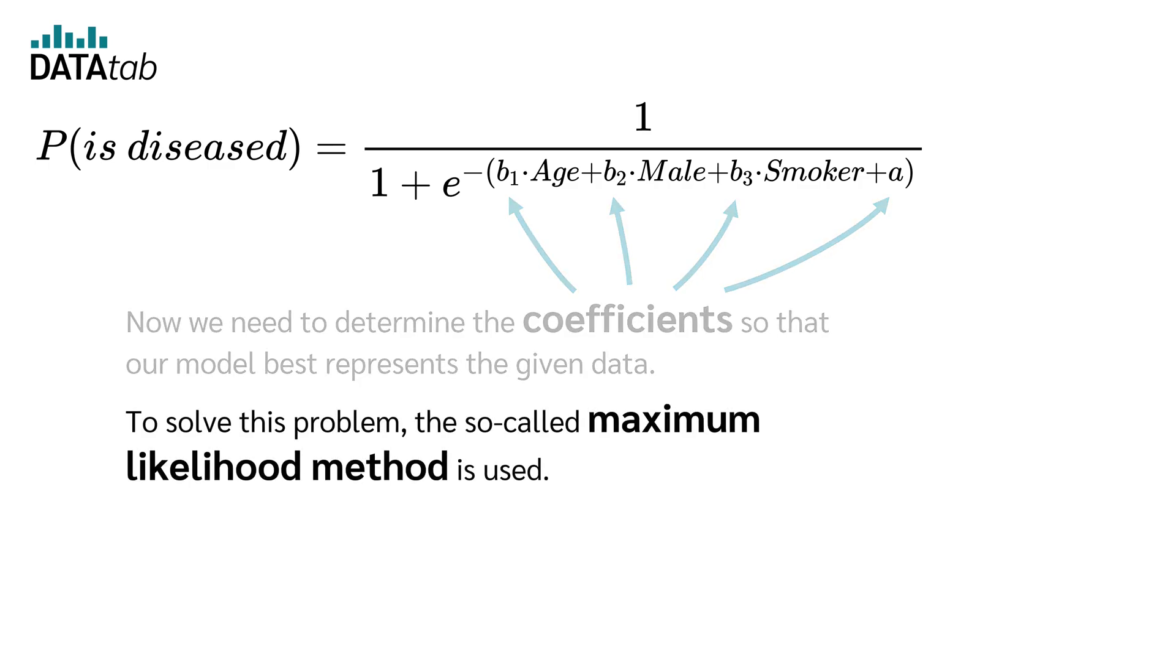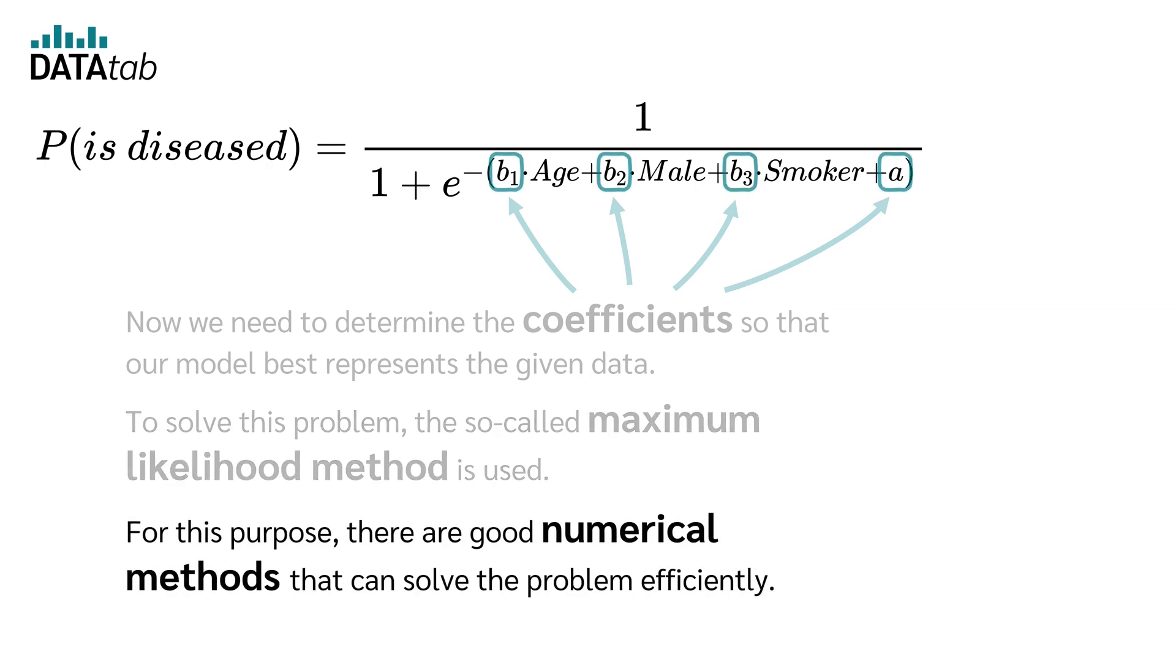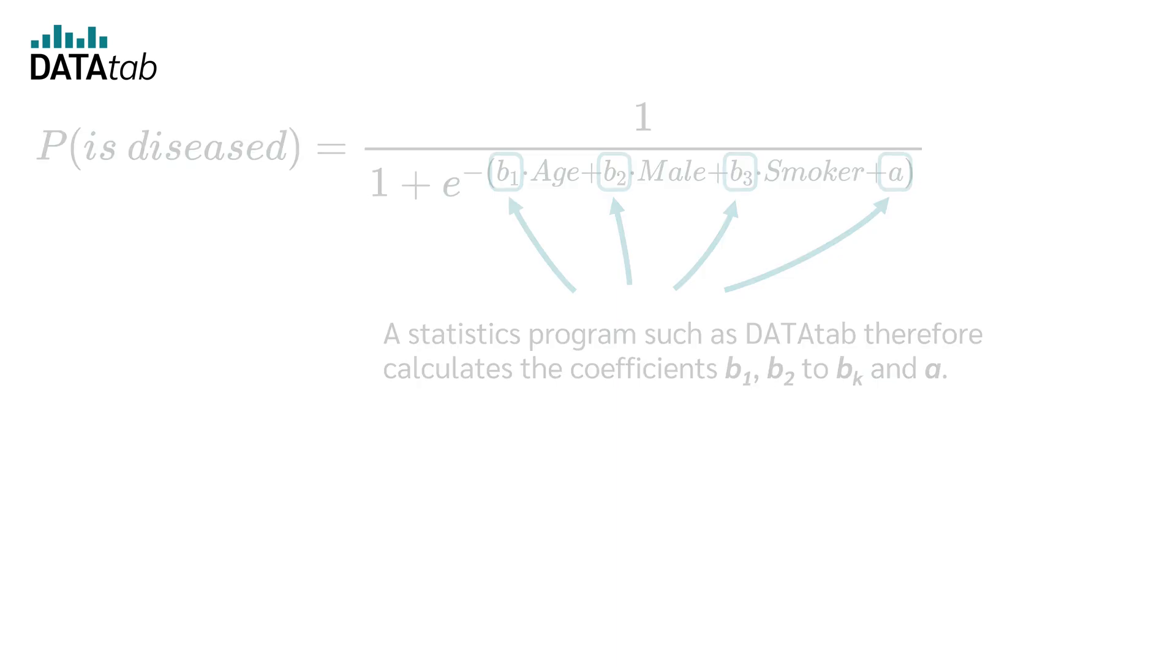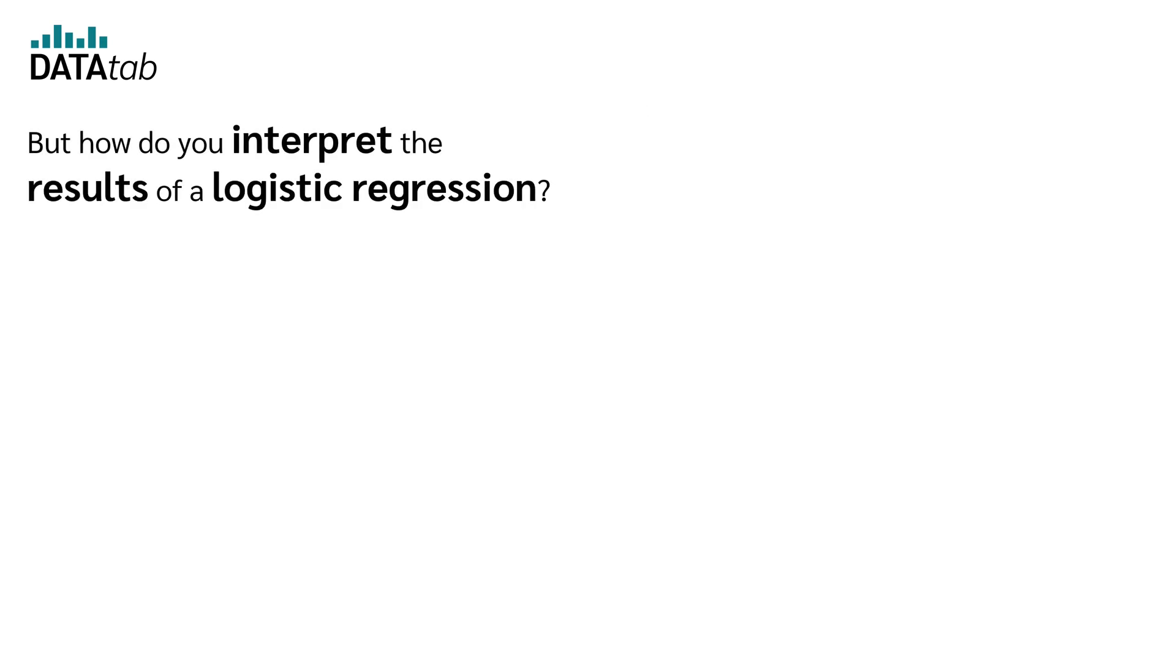To solve this problem, the so-called maximum likelihood method is used. For this purpose, there are good numerical methods that can solve the problem efficiently. A statistics program such as Datadap therefore calculates the coefficients b1, b2 to bk and a.